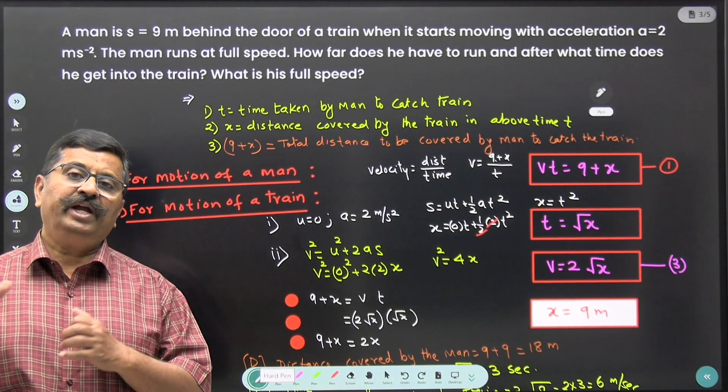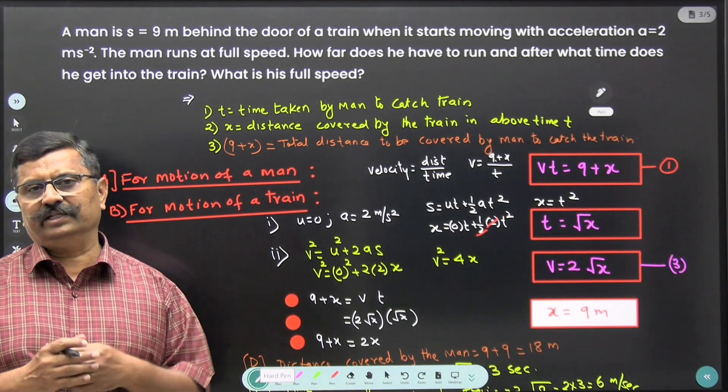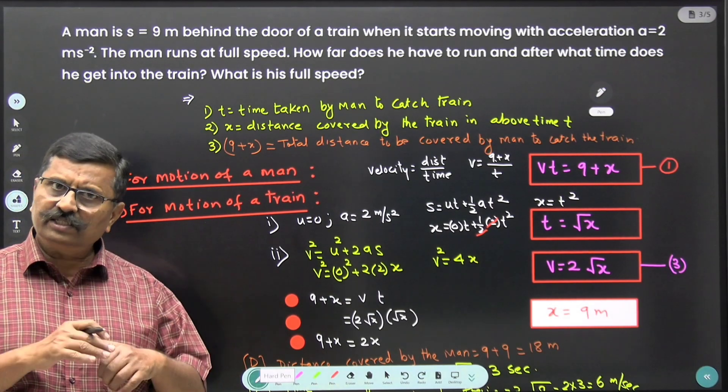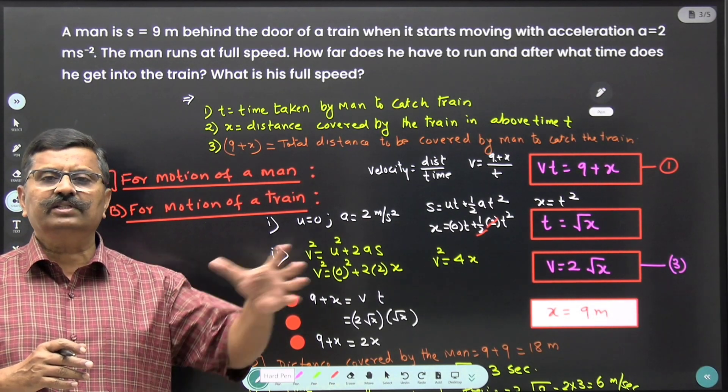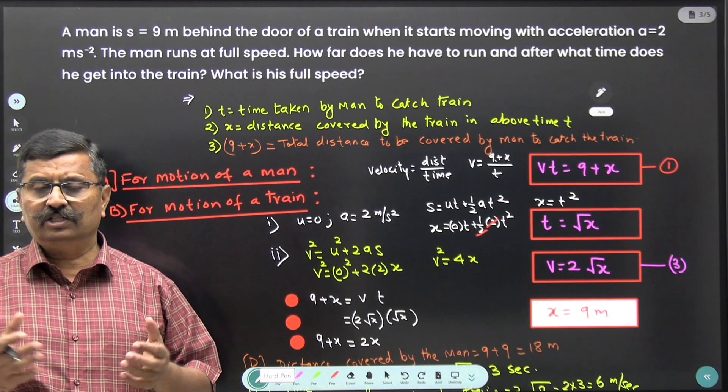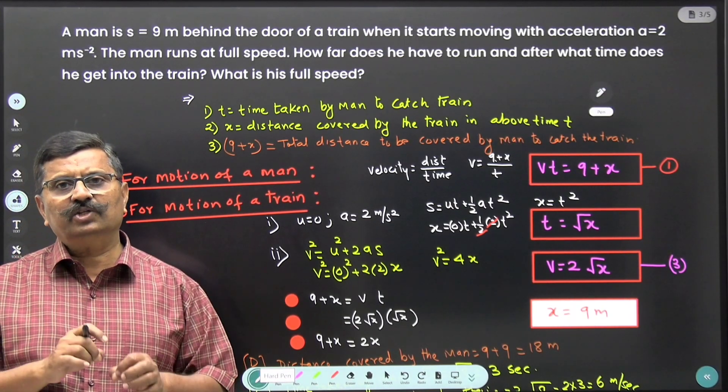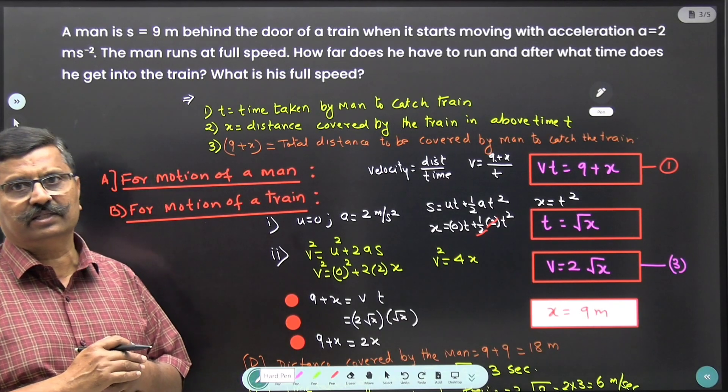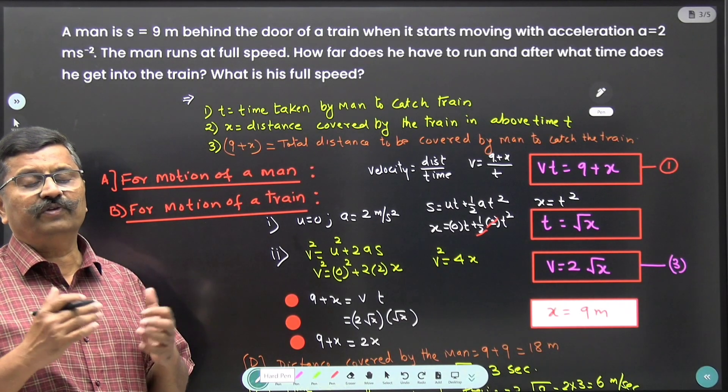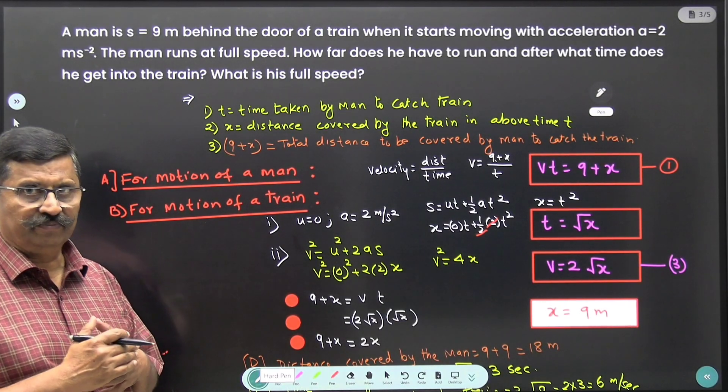Let man takes t seconds to catch the train. In that t second the train also cover certain distance say x. Therefore total man has to cover 9 plus x meter distance. Now let's see how to find the distance x.